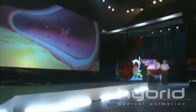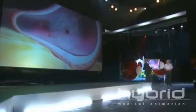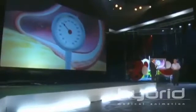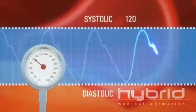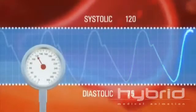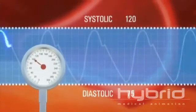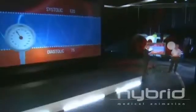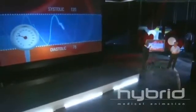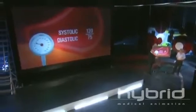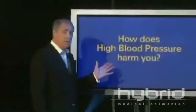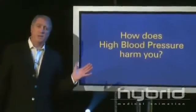When we measure blood pressure, we measure it in arteries and we measure two numbers. The higher number is the systolic pressure, which is the highest pressure generated when the heart contracts. The lower number is the diastolic pressure, which is the residual pressure in the circulation at the end of cardiac contraction.